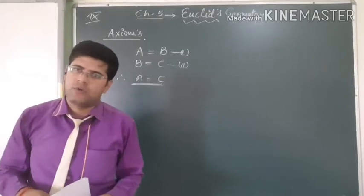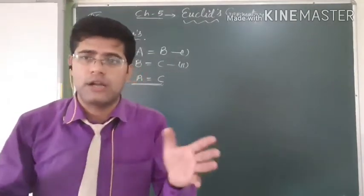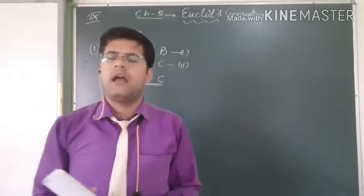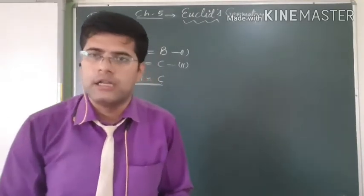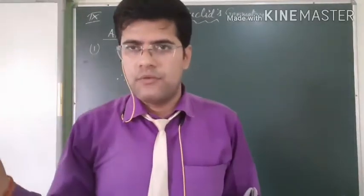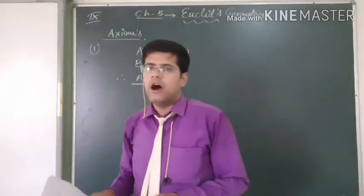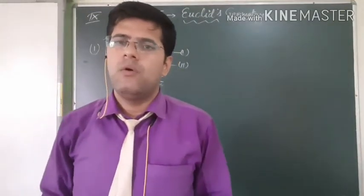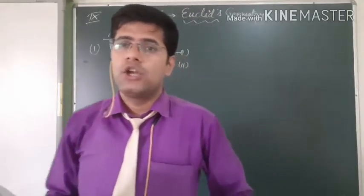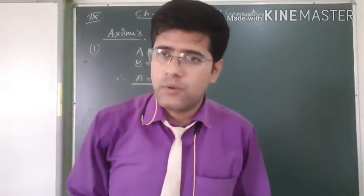If you are a student of class 9th A, and another person is also a student of class 9th A, it means you both are students of class 9th A. If A equals 100 and B equals 100, it means A and B are equal because both are equal to 100. When two things are equal to a common thing, then both those things are equal to one another.